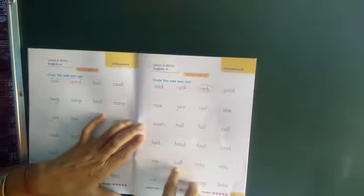Last, hand, fast, cast - hand is odd one, circle the hand. Sack, tall, fall, wall - tall is odd one, circle the tall. Car, camp, dam, land - car is odd one, circle the car.